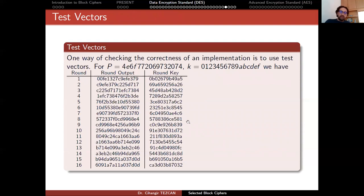Some test vectors are provided to check if your implementation is correct. For the example: a specific plaintext block is chosen with a specific key; from these the round keys are computed, and the round outputs are given. The last value is the ciphertext block. NIST standards and documents always contain these test vectors so that implementers can verify they are performing the encryption operation correctly.